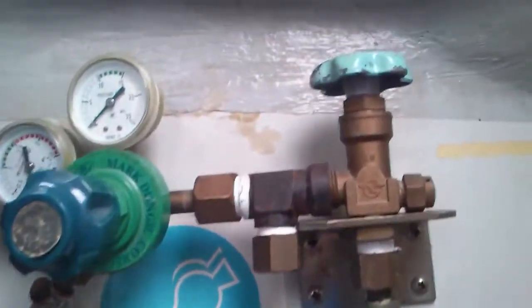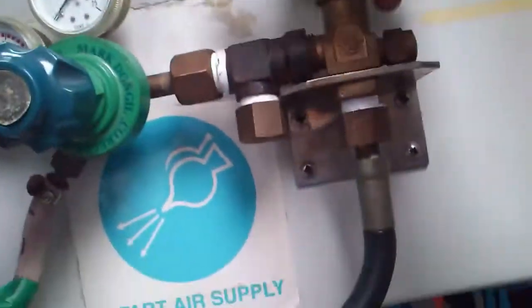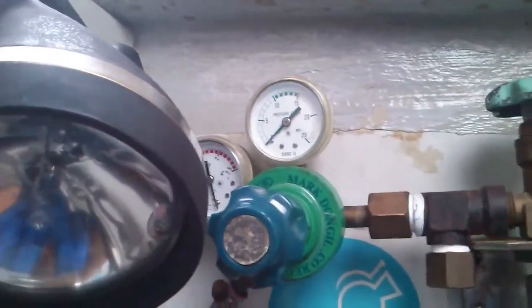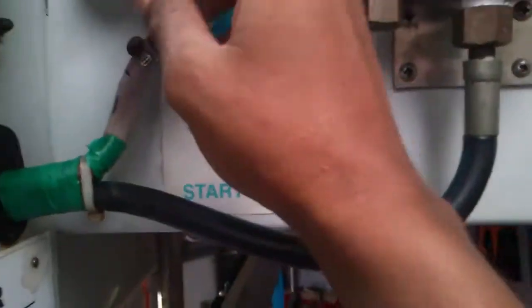For testing oxygen bottles, open the air bottle from there, then open this valve - it will show you the pressure here, how much is the bottle pressure. Then after testing, close the bottle from there.